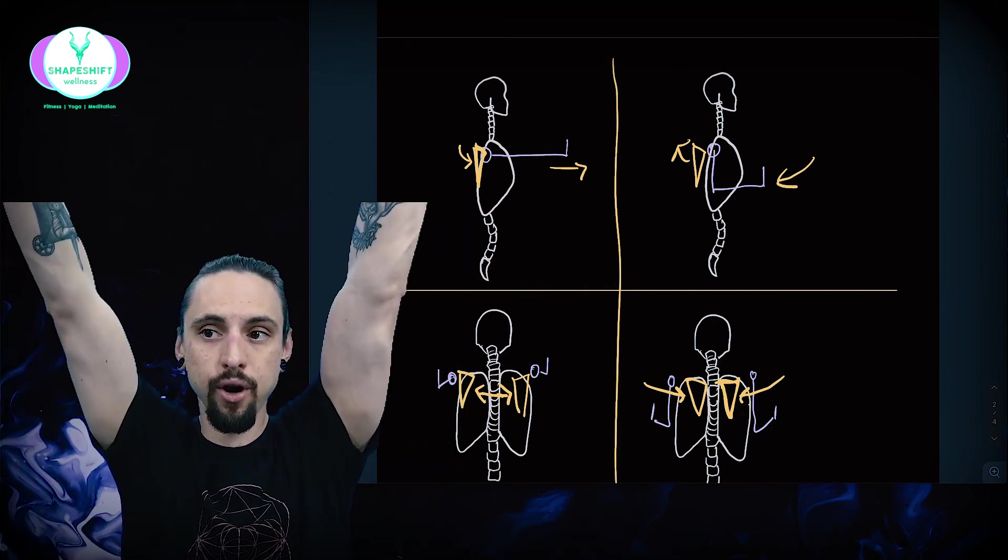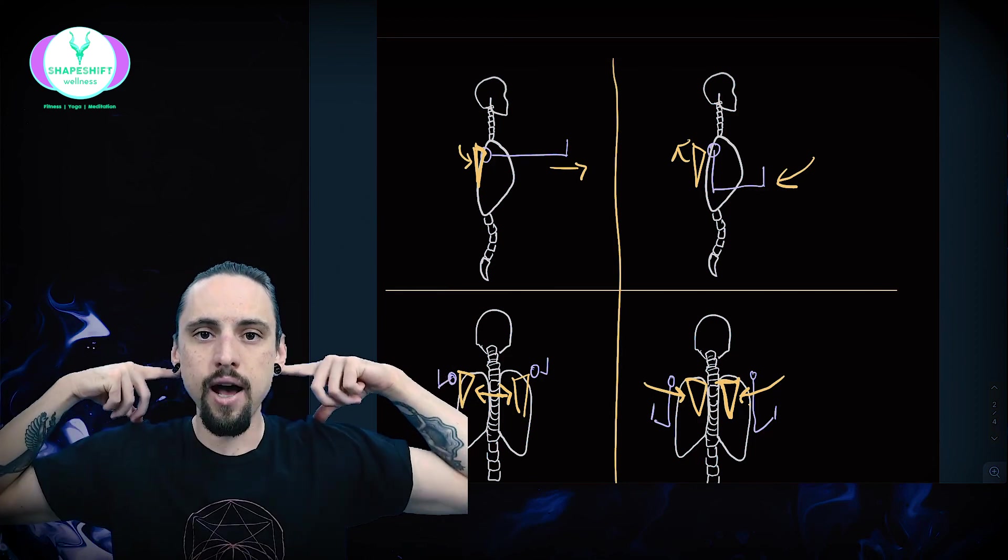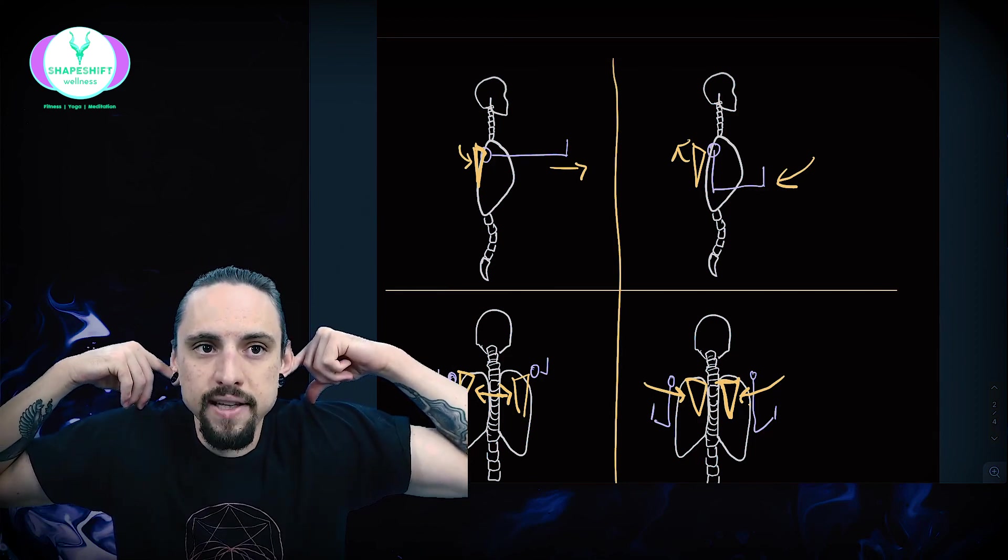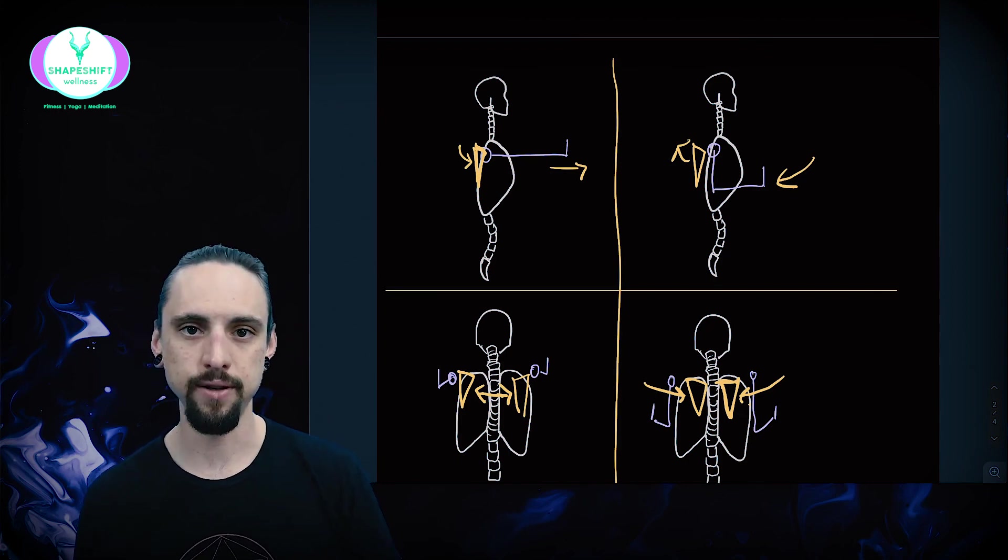Now the arms are not going overhead. In this case, we wouldn't have the shoulder blades going up by the ears because that's not really where the arms are going in this motion. Makes sense.